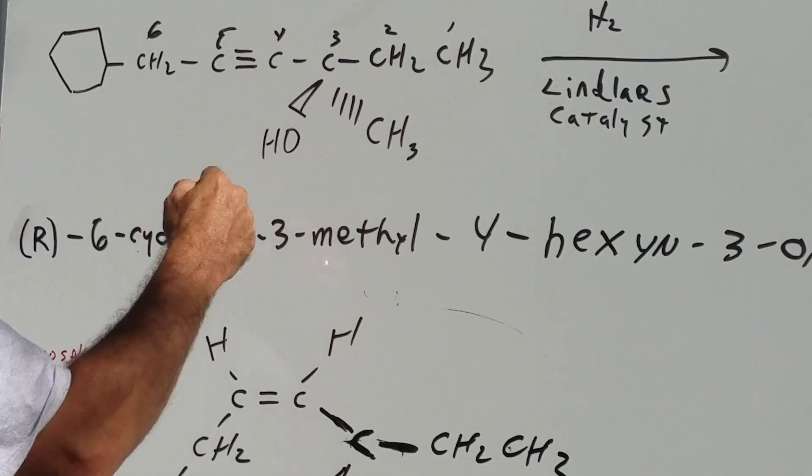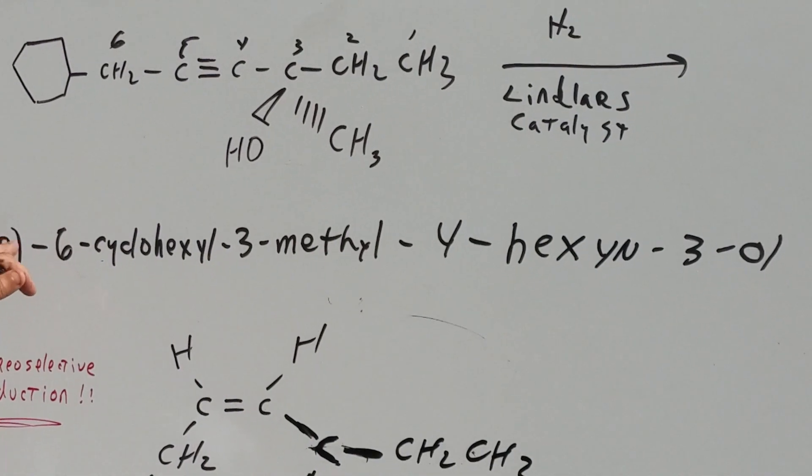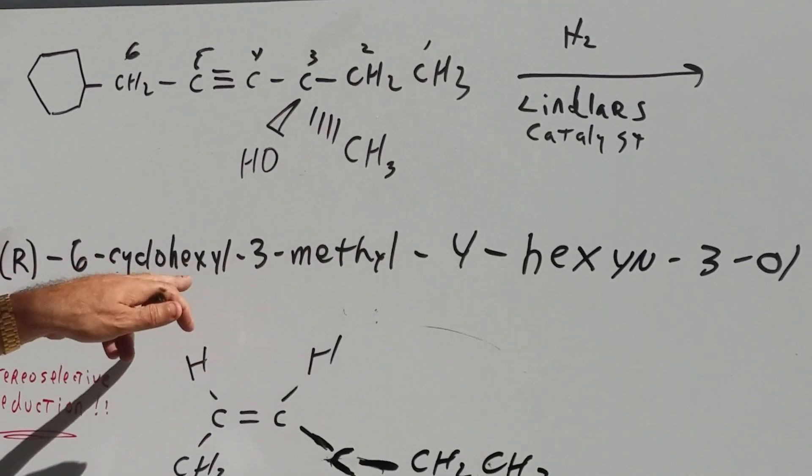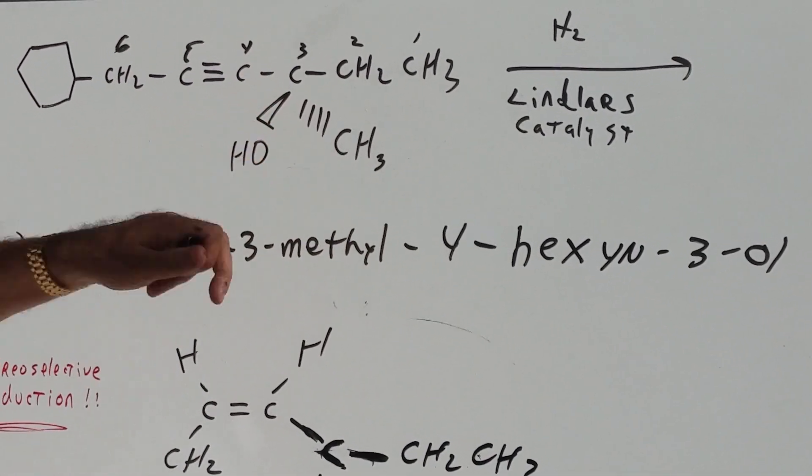So we're going to go around clockwise, and it's clear that this is an R. So we're going to get an R6-cyclohexyl-3-methyl-4-hex-ion-3-ol.